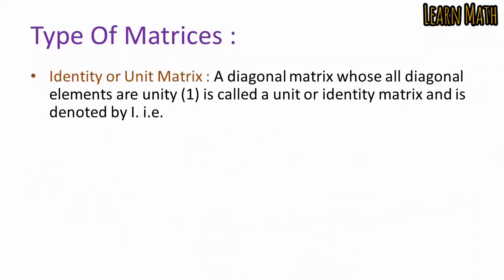An identity matrix or unit matrix is a diagonal matrix whose all diagonal elements are equal to unity (1). It is denoted by I. For example, the 3×3 identity matrix has 1s on the diagonal and 0s elsewhere. Since all diagonal elements are 1, this is called an identity matrix.